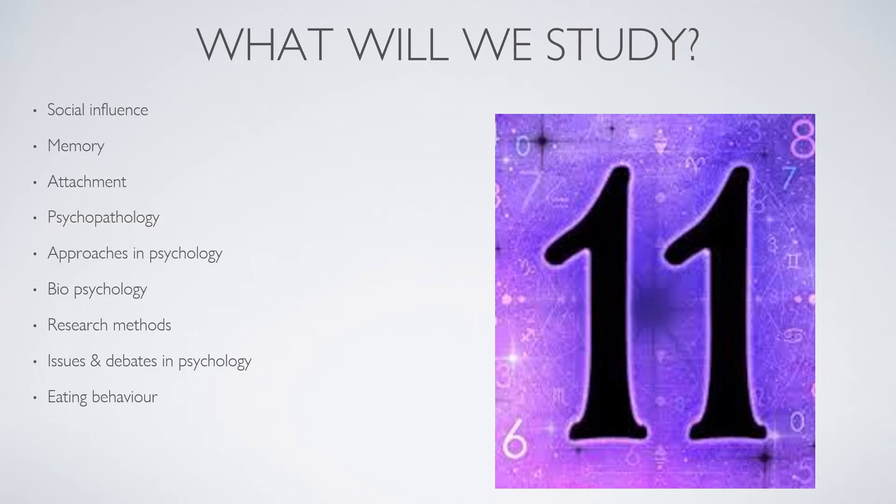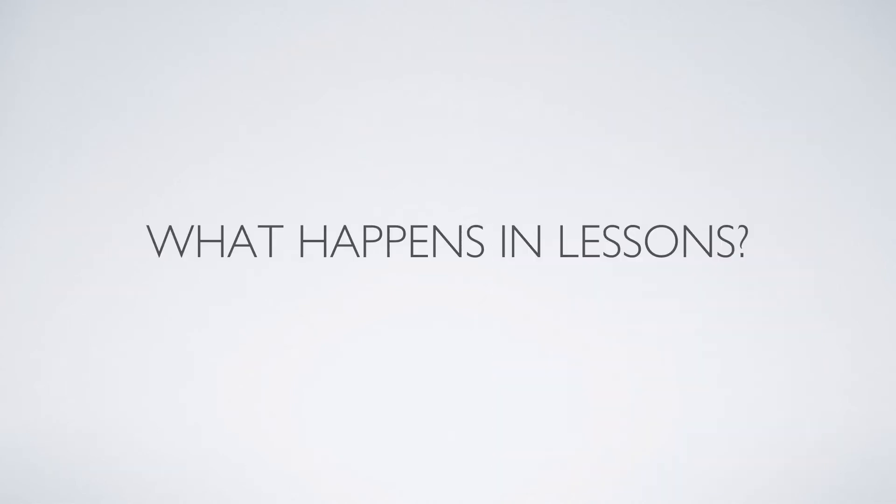In eating behavior we look at food preferences and anorexia and obesity. In relationships we look at romantic relationships, virtual relationships, so relationships online, and those very odd relationships we have with celebrities who we're never even going to meet. Forensic psychology is about psychology and crime, so why do people commit crime and what psychological basis do we have for the punishments as well.